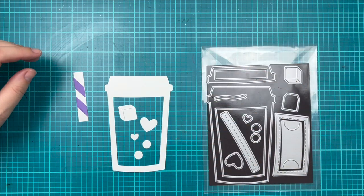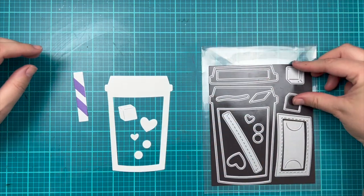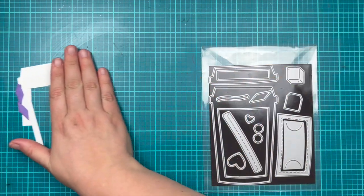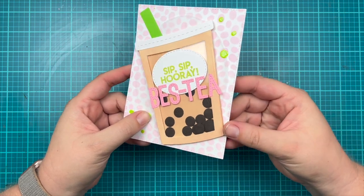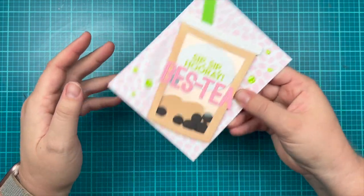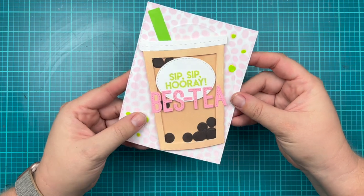So those are all of the dies that come in the set. I do have an example already made that I'd like to show you where I trimmed off the top of the coffee cup. Here I made a little boba tea and I used those little circles in brown to create boba inside of my shaker card.